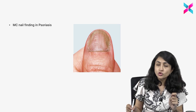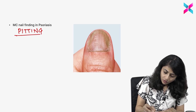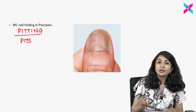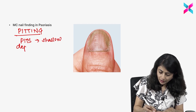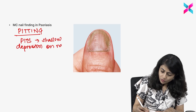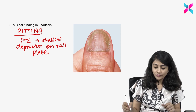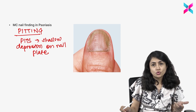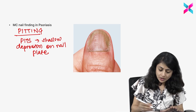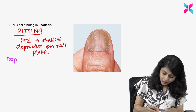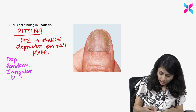The first, foremost, and most common nail finding in psoriasis is pitting. If you look at the nail, you see these shallow depressions on the nail plate, called pits — and the phenomenon is called pitting. You also see pitting in other conditions like alopecia areata and some forms of eczema. The psoriasis pitting is different: it is deep, random, irregular, and large.